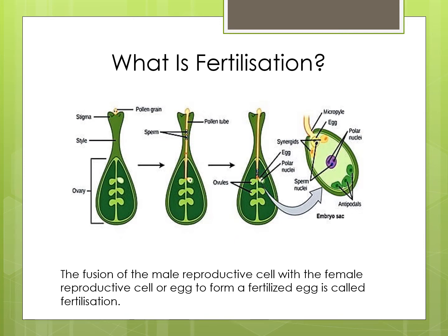So with this, you can see — with the help of this diagram — the fertilization in the flowering plants and how it happens.